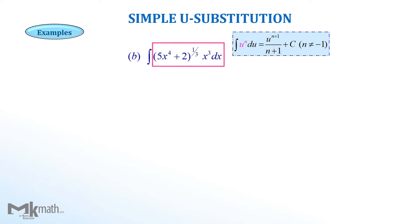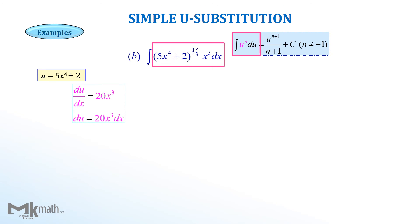First, we need to match up the integrand with the left side of the formula. 5x to the fourth plus 2 should be u. Once we decide u, we take the derivative of u to get 20x cubed, then convert it to the differential of u as 20x cubed dx.